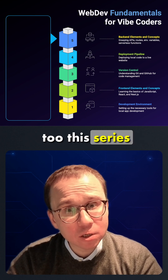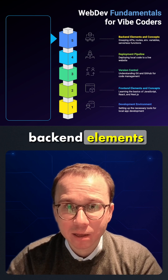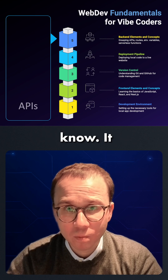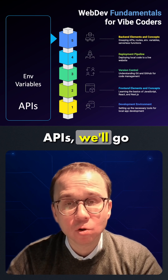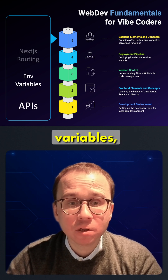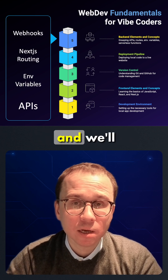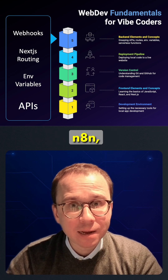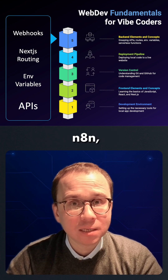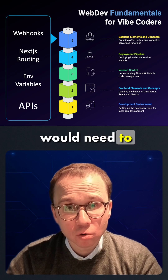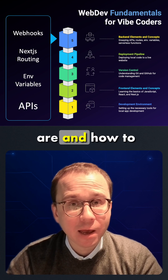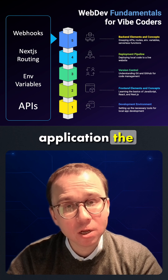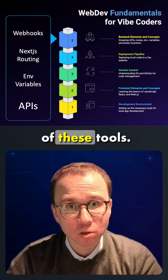In the last episode of this series, we will go through some backend elements and concepts that every Vibe Coder should know. It starts with APIs. We will go through environmental variables, Next.js routing, and we will finalize this series with webhooks. If you are using NA10, Zapier, or Make.com, you will need to know what webhooks are and how to call from your Vibe Coded application the backend which you developed in one of these tools.